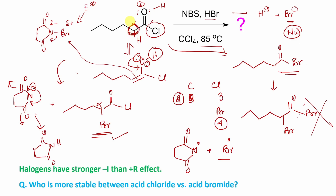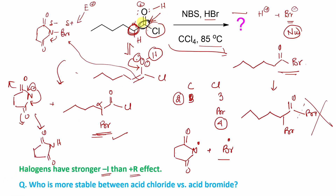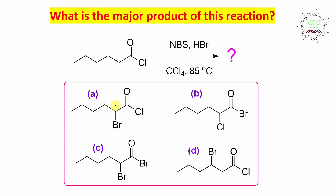Remember one statement: this halogen has a stronger minus-I effect rather than plus-R. That's why the acid chloride carbonyl carbon is always electron-deficient or extremely electrophilic in nature. And who is more stable between acid chloride and acid bromide? As I told you, acid chloride is relatively more stable. Acid chloride itself is not a stable molecule, but comparing the two, acid chloride is relatively more stable than acid bromide. So the product is obviously the alpha-bromo acid chloride — this is the answer.